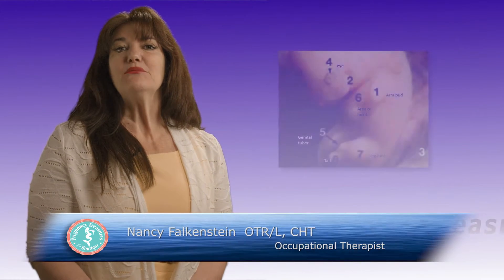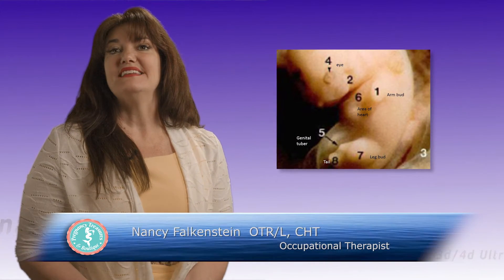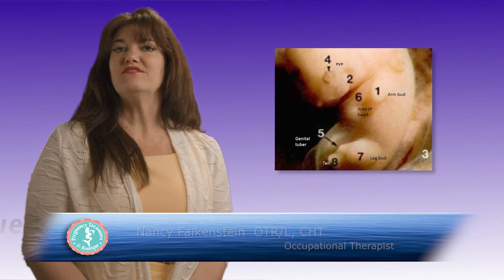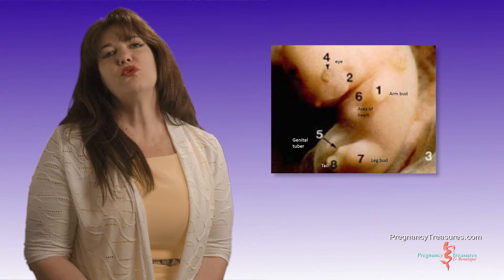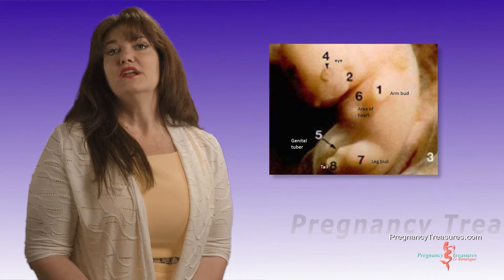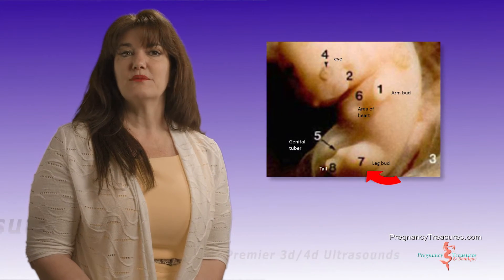Embryonic development of the arm and legs. Limb buds are first visualized at day 26 or 3.5 weeks after fertilization when the embryo is measuring 4 millimeters in length. Number one is an arm bud and number seven is a leg bud.